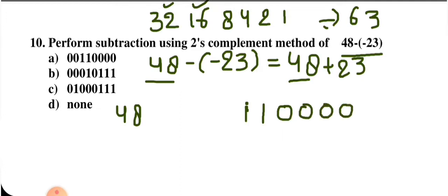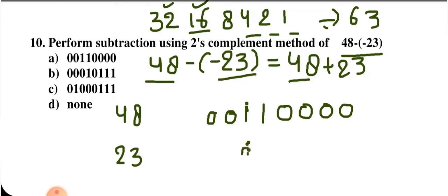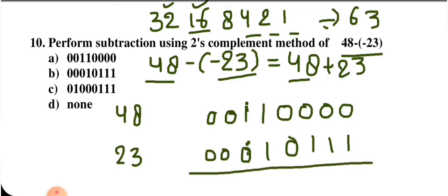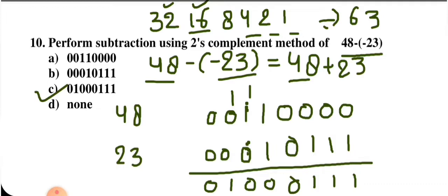Adding the two binary numbers 00110000 and 00010111, performing binary addition step by step with carries, gives the result. Matching option C, which is the right option.